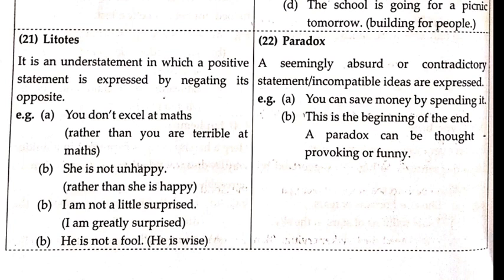Paradox is a seemingly absurd or contradictory statement where incompatible ideas are expressed. Example: 'You can save money by spending it' — this doesn't make real sense. 'This is the beginning of the end' — beginning and end are completely contradictory words, but they are used together to make a sentence more interesting and poetic. Such kinds of sentences are called paradox.